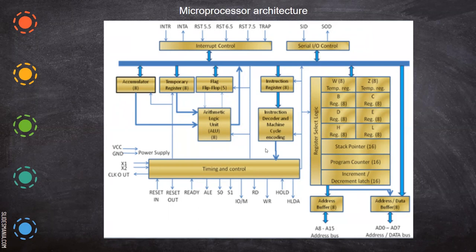What is meant by decoding? What is said in the instruction — for example, whether it is an addition, subtraction, multiplication, or a loop — everything has to be understood. First, the instruction will be loaded into the instruction register, which in turn will be decoded and understood, and it will be executed based on the timings of that particular instruction. All those things are controlled by the timing and control unit, and all these signals go to the respective forms.